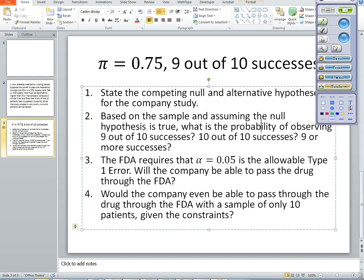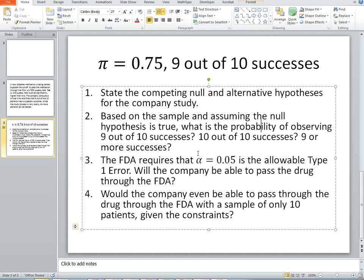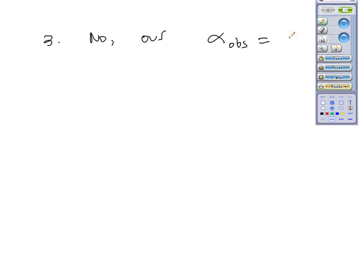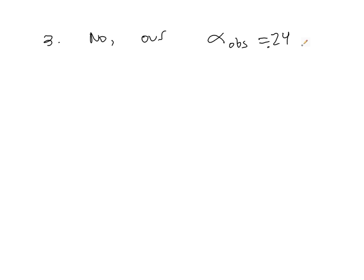So, we would conclude, no, our alpha observed, our error rate is about 24%, 0.24. Whereas, we are only allowing an error rate of alpha equals 0.05, or 5%.